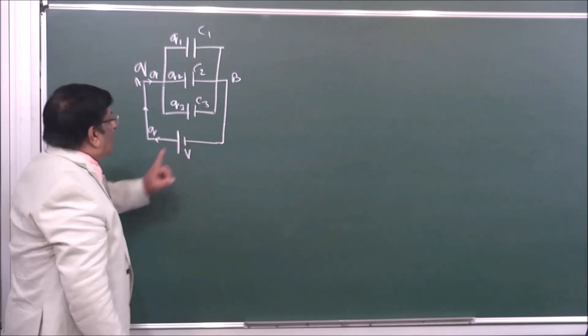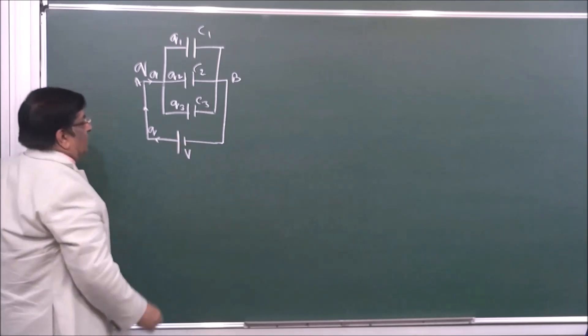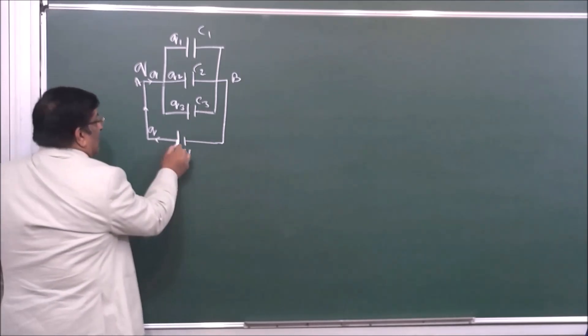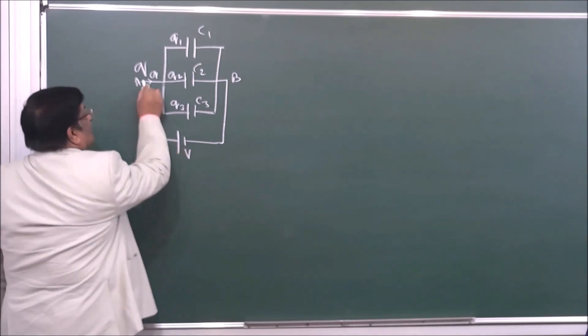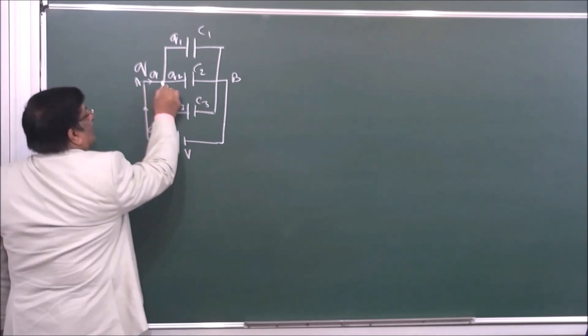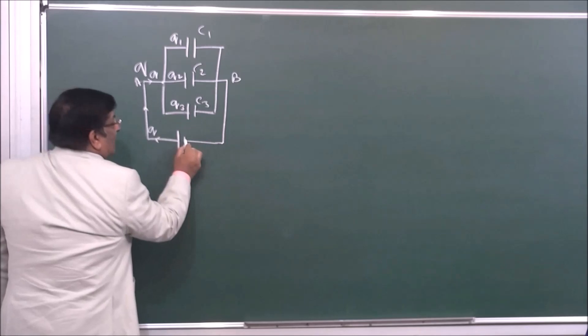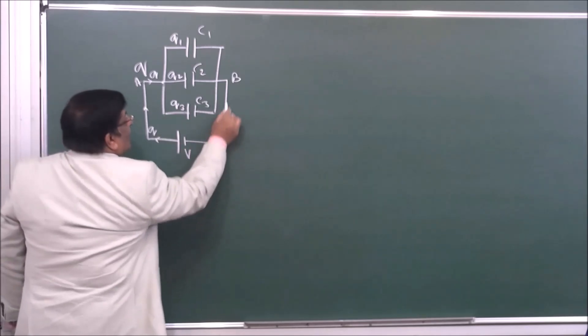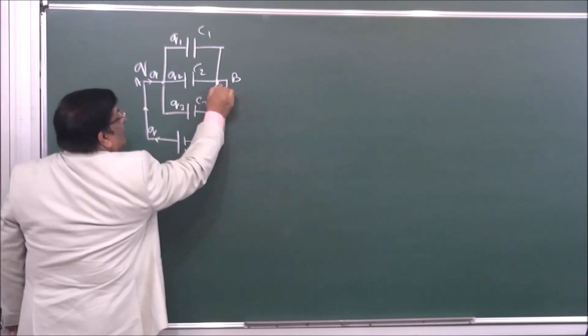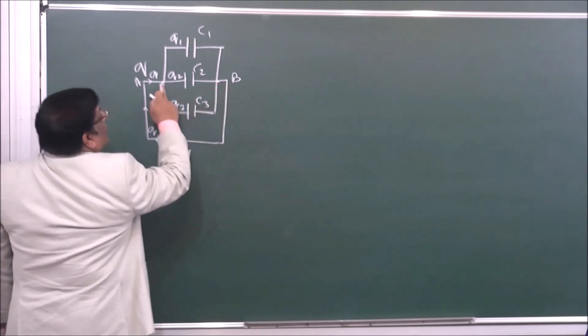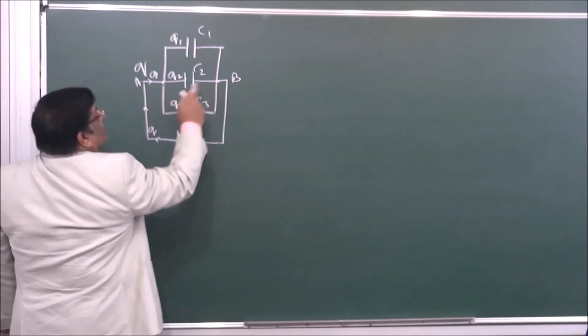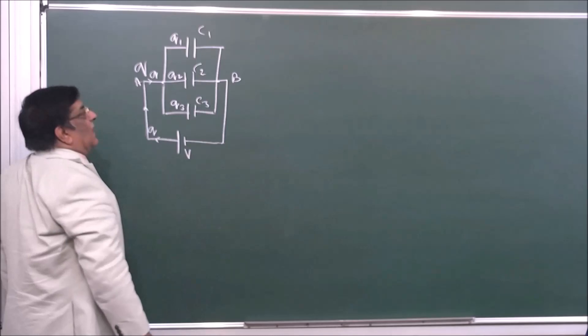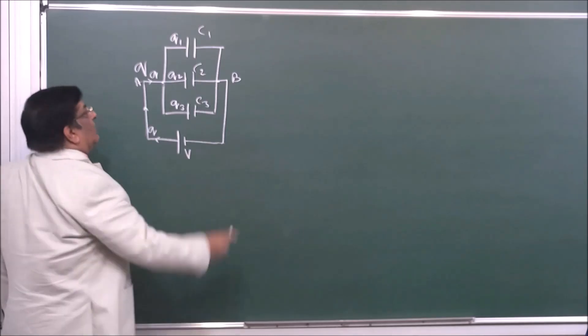These two plates have potential difference V. This plate is connected here and this plate is connected here. So the potential difference across these two is V.